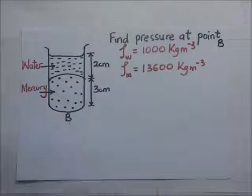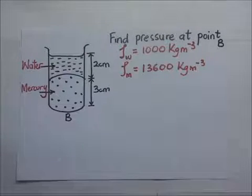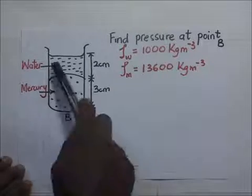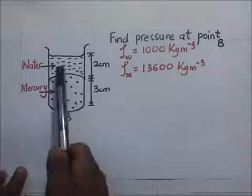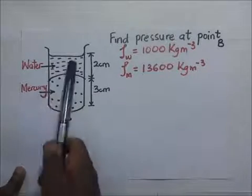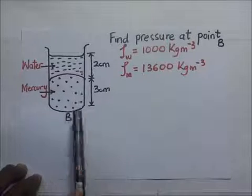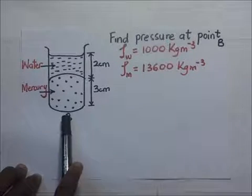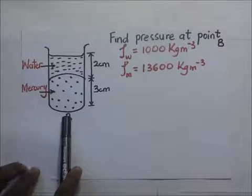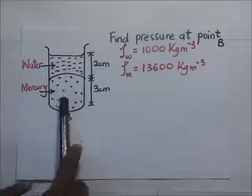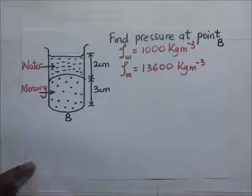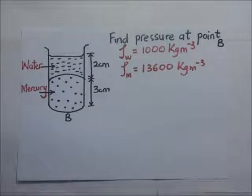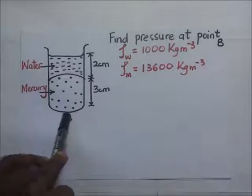We're required to find the pressure at point B. In this vessel we have two liquids — water and mercury. Water floats on top of mercury because water is less dense. To find the pressure at point B, we find the pressure exerted by the mercury, then the pressure exerted by the water, and add the two pressures to get the total pressure exerted at point B.